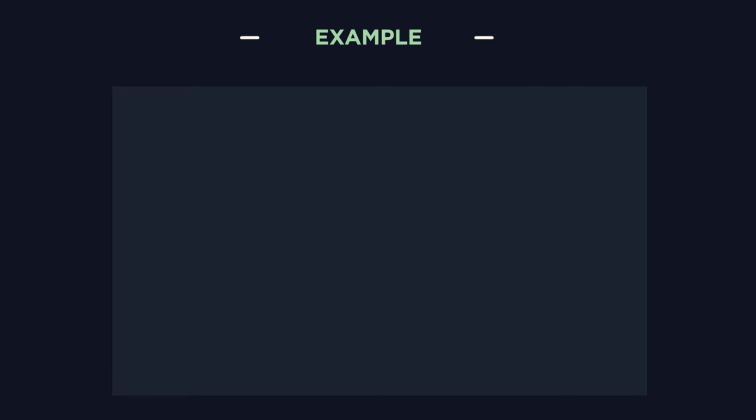We multiply 5.2 by 2 to get 10.4 and we add the powers of 10, so 5 add 3 is 8. 10.4 times 10 to the 8. But be careful,